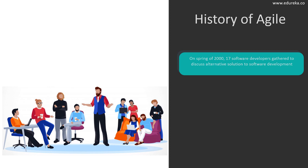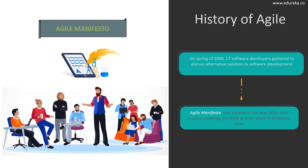It all started in spring of 2000 when a group of 17 software developers met in Oregon to discuss how to speed up development times to bring new software to market faster. They recognized two key opportunities: shortening the delay of benefits to users to resolve product-market fit, and getting feedback from users quickly to confirm the usefulness of new software. Less than a year later, the same 17 developers met at a ski resort in Snowbird, Utah, and within three days produced the Agile Manifesto.